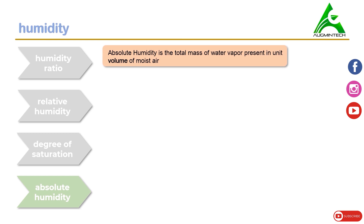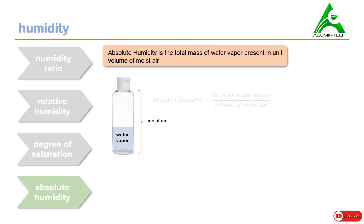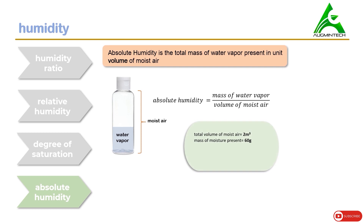Absolute humidity is the total mass of water vapor present in a unit volume of moist air. To find absolute humidity, we take the ratio of the mass of water vapor to the total volume of moist air. The unit volume can be one centimeter cubed, one meter cubed, or one liter, giving different units accordingly. For example, if the total volume of moist air is 2 m³ and the mass of water vapor is 60 grams, then absolute humidity is 30 grams per meter cubed — meaning one cubic meter of moist air contains 30 grams of water vapor.